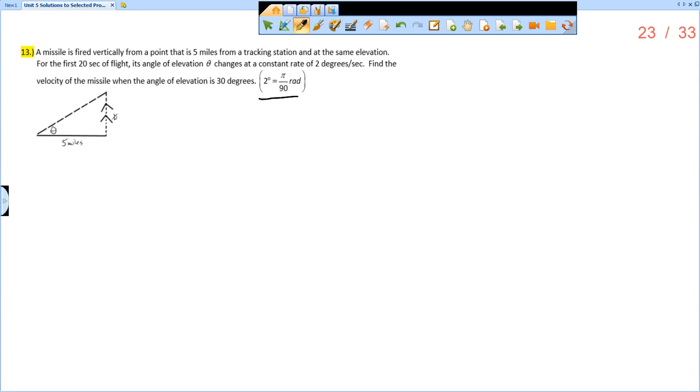So, I have this picture here. X is representing the distance that the rocket is above the ground. Theta is representing the angle. Five is representing this distance. That is not changing, so we leave it as five.